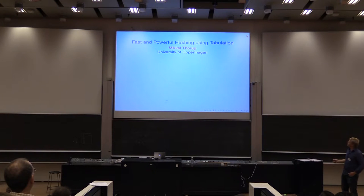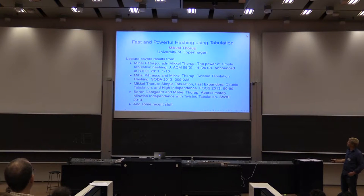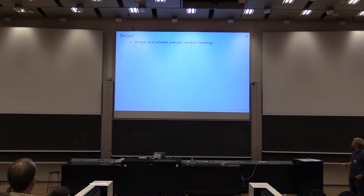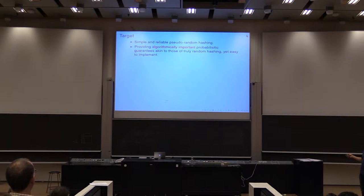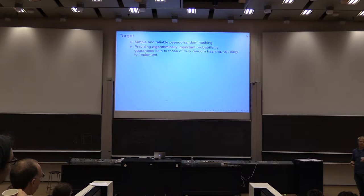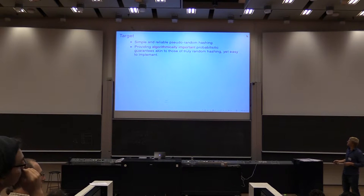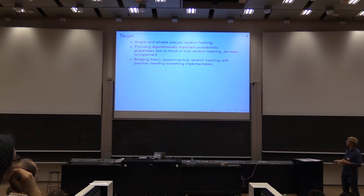I'm going to talk about fast and powerful hashing using tabulation — various different forms of tabulation. Since I can't do this on a blackboard to get through so many things, I'll have some slides. The basic target is to have simple and reliable pseudorandom hashing which provides some of the algorithmically important probabilistic guarantees that we would have with truly random hashing. As Michael Mitzenmacher said, truly random hashing allows a lot of nice analysis, but those things don't exist, so can we actually implement these hash functions in a reasonable way?